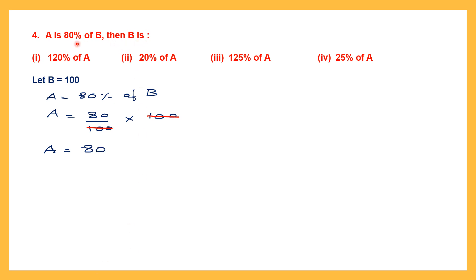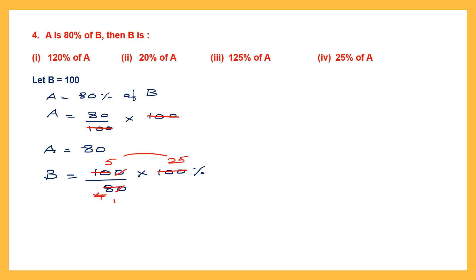Cancelling: 10 and 8 by 2 gives 5 and 4; then 4 and 100 gives 25. Multiplying numerators: 5 into 25 is 125, denominator is 1. So B is equal to 125% of A, and that is option 3.